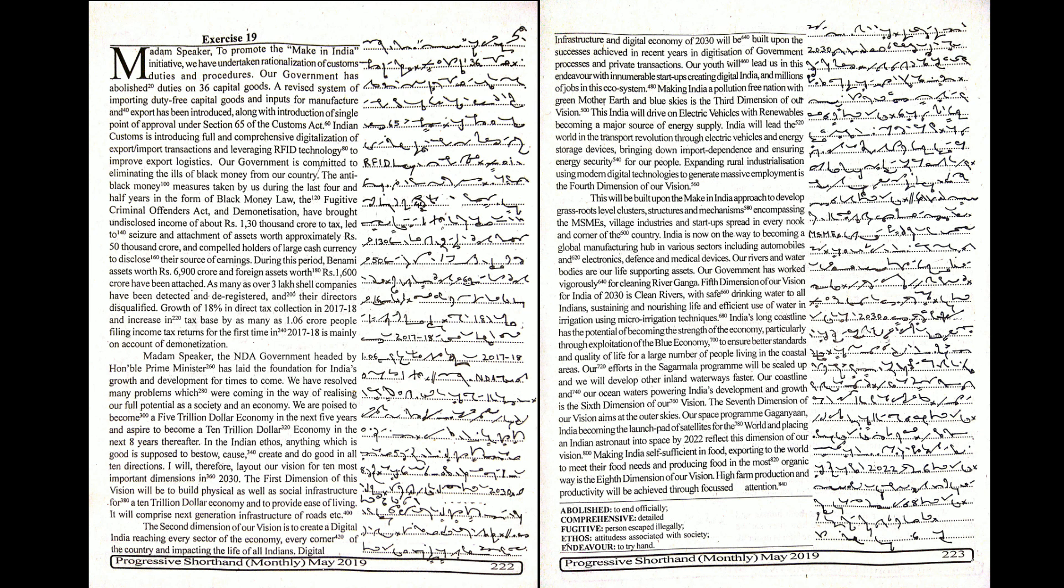The first dimension of this vision will be to build physical as well as social infrastructure for a $10 trillion economy and to provide ease of living. It will comprise next generation infrastructure of roads, etc.